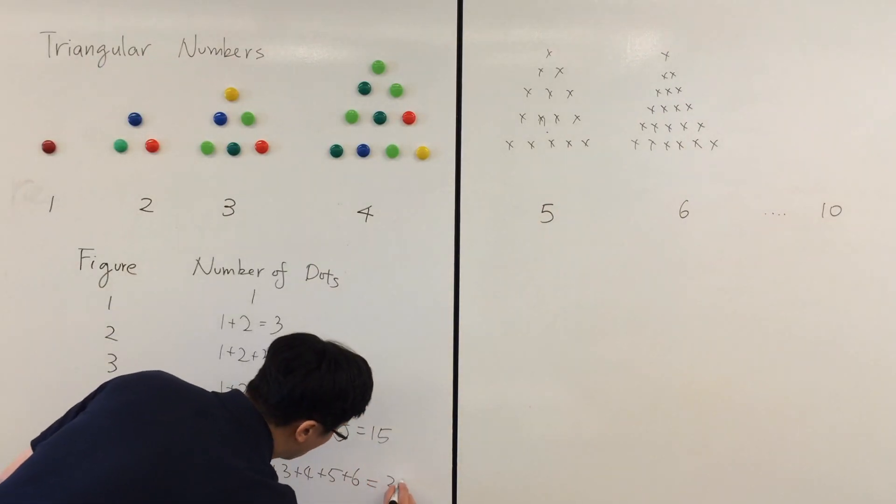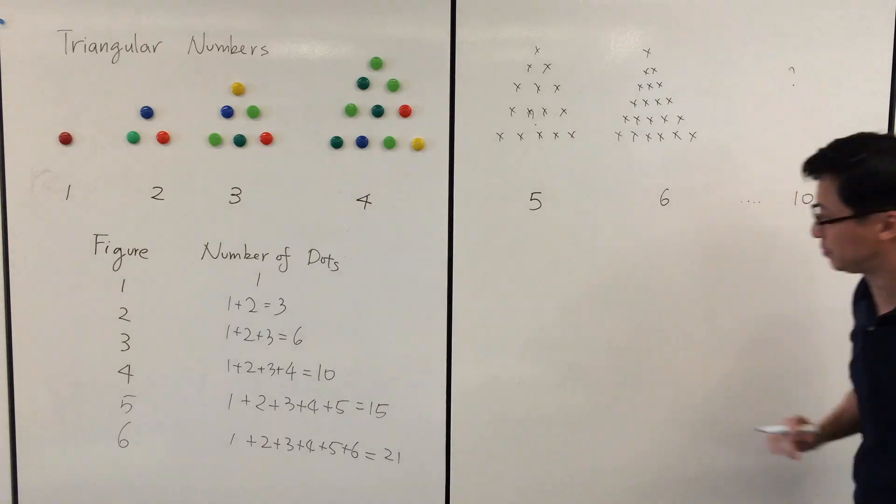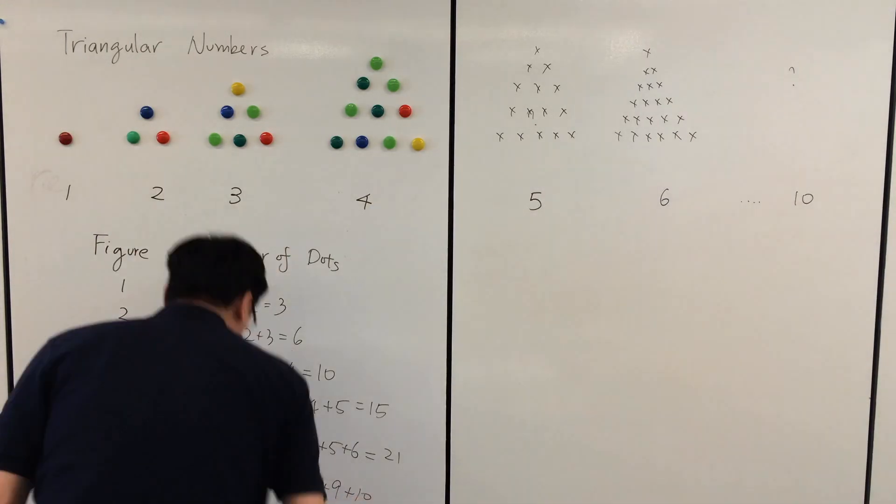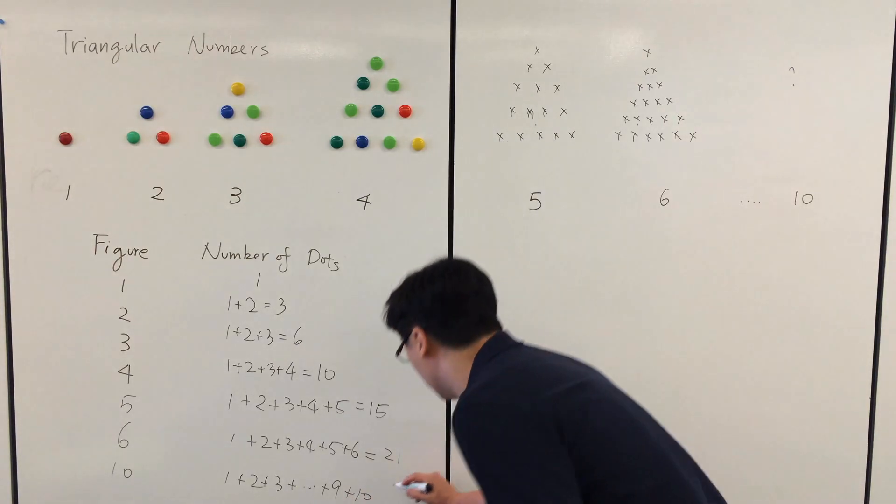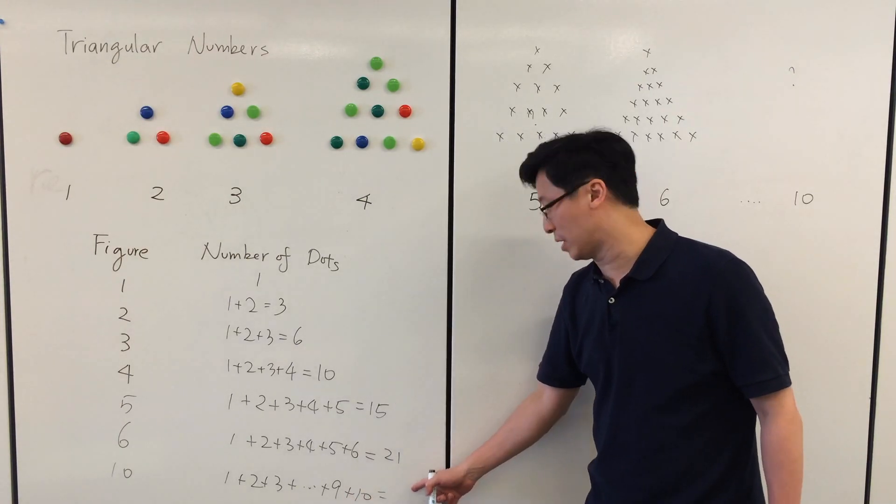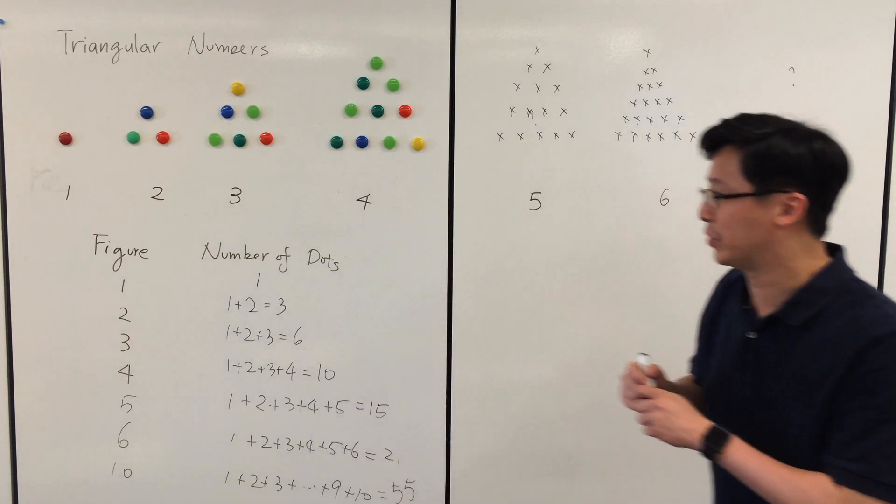This is 21. For the tenth one, 1+2+3 until we add to the number 10. If you add up the numbers it will give you 55 dots.